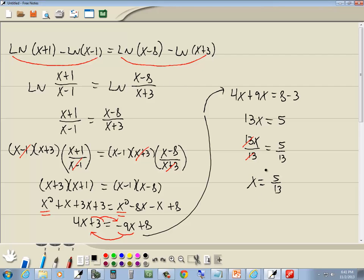Now 5 thirteenths, that's less than 1. If I plug that back in my original problem here, 5 thirteenths minus 8. I don't know what it is, but it's negative. And we can't have a log of a negative number, so that doesn't work. So since we crossed out our only answer we found, then the answer is no solution. There's no answer to that problem.